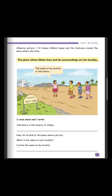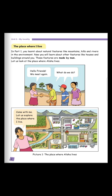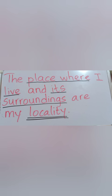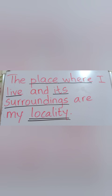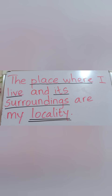Page 3 of the book. Observe picture one — it shows Alicia's house and the features around the place where she lives. What can you see? I can see a playground, the parking, the bus station, other buildings. Let us read this together: The place where I live and its surroundings are my locality.